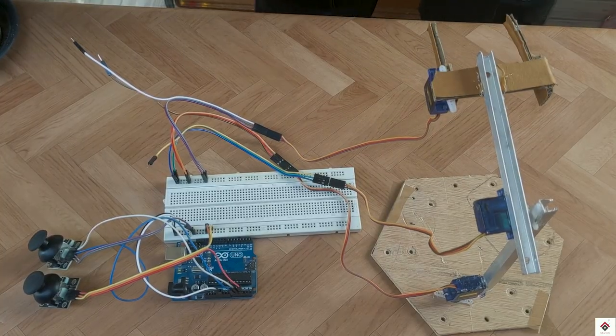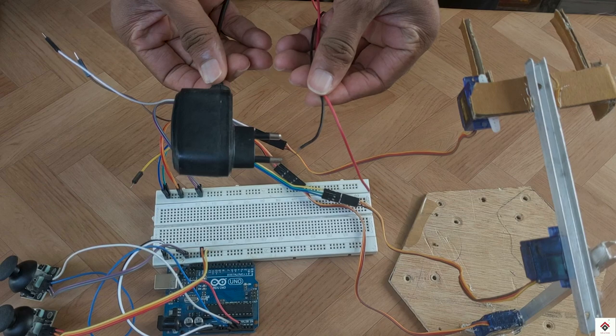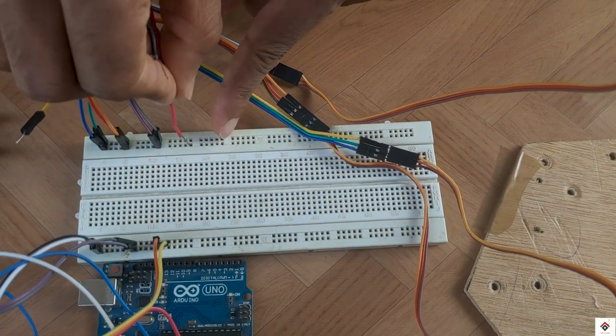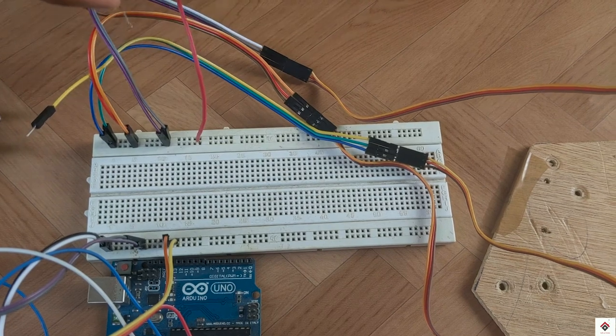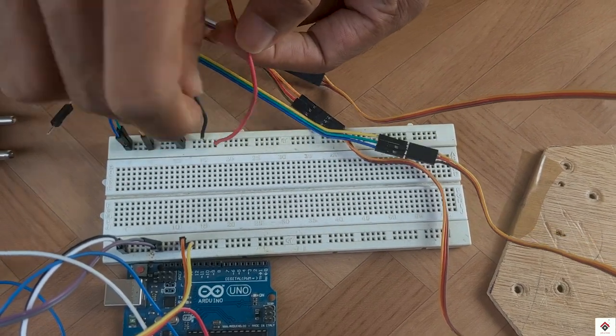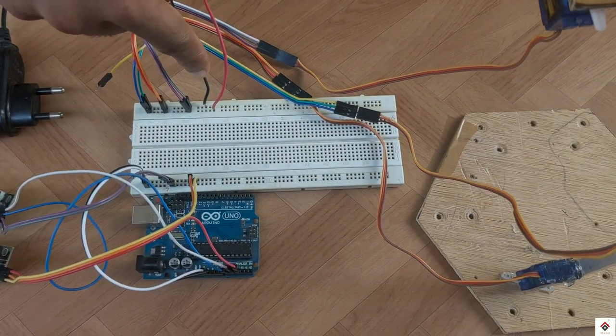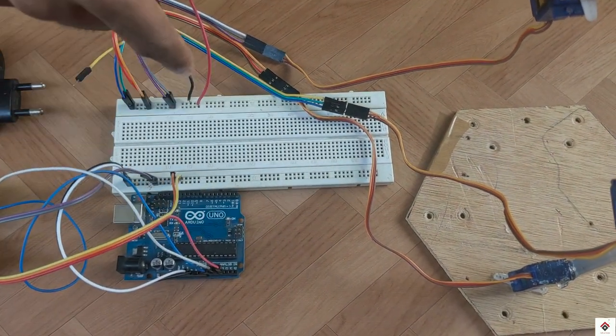And as I've explained before, I'll be using this mobile charger as an external power supply to power the servo motors. So here I'll be connecting the positive and the ground, and also make sure you connect Arduino and the power supply ground in common.